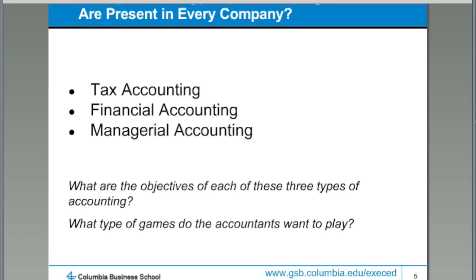There are a set of rules and regulations governing financial accounting as well. Financial accounting drives how we prepare our annual report to our shareholders and all of our external financial reporting that is required if we're a publicly traded company in the U.S. or just about any other country in the world. The objective of financial accounting is really to maintain good investor relations — we want our investors to believe that their investment has been a good investment. So with tax accounting, we want to make our income look as small as possible, while with financial accounting, we want to make our income look as good as possible — the exact opposite objective.